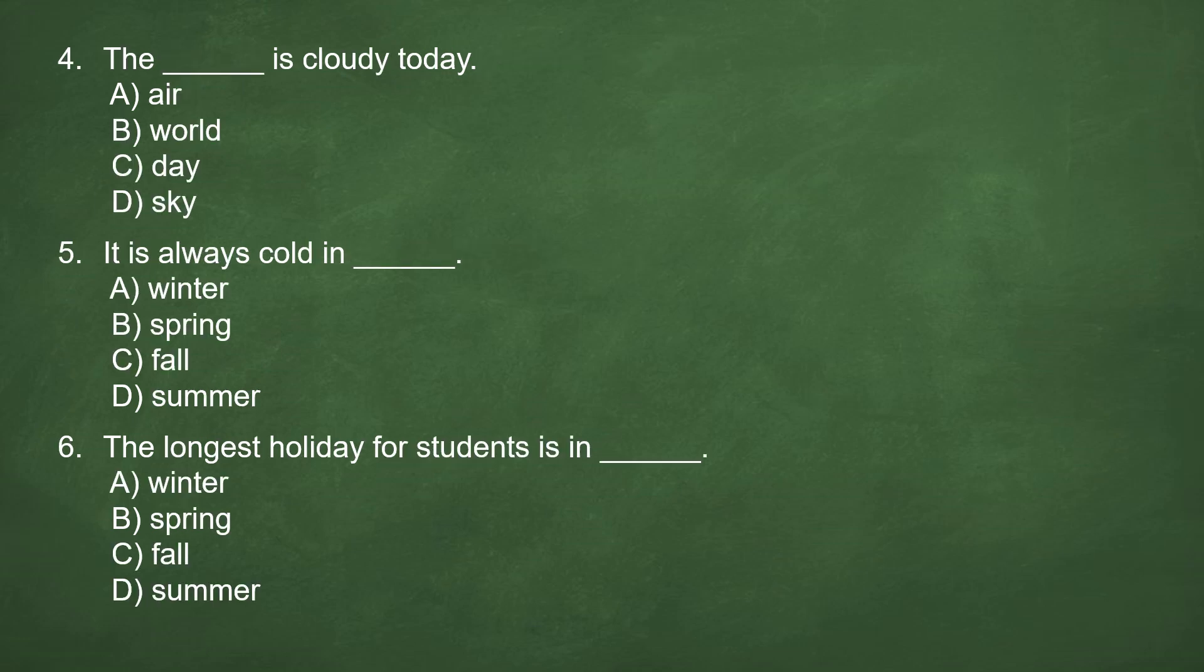Number 4. The blank is cloudy today. A. Air. B. World. C. Day. D. Sky. Answer: D. Sky. The sky is cloudy today.